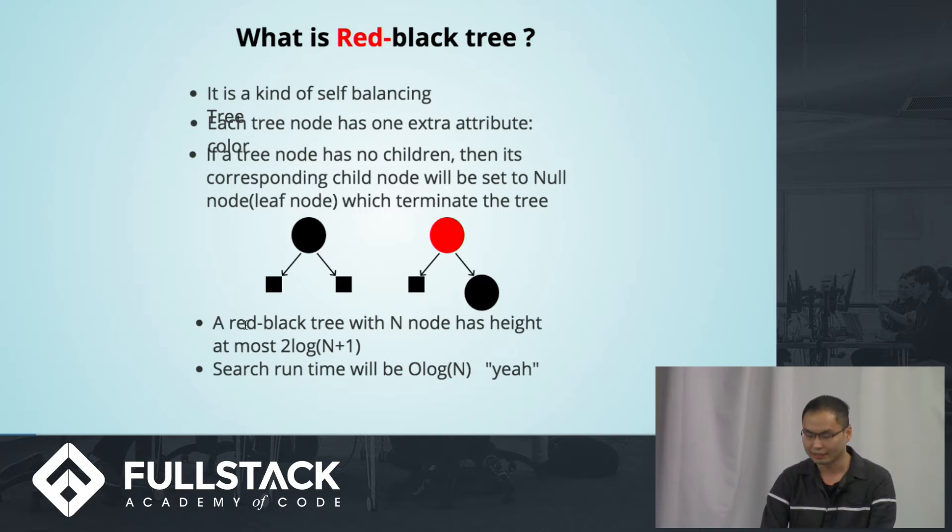This is a very important property. The red-black tree with N nodes has a height of, at most, 2 log of N plus 1. This is kind of the bread and butter of red-black tree here. Which means it leads to the search runtime with O log of N. Why? Because those searching operations are directly affected by the height of the tree.